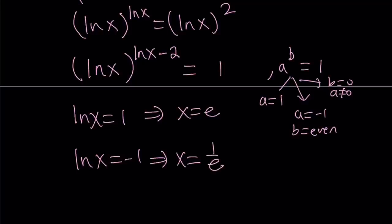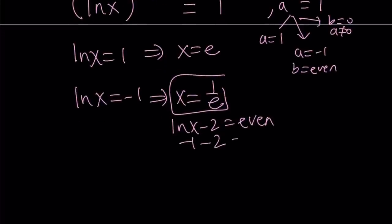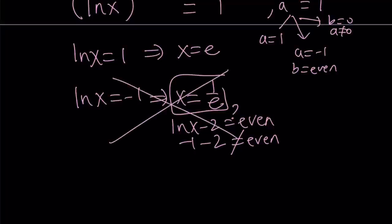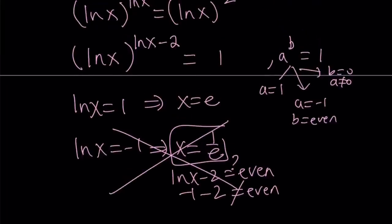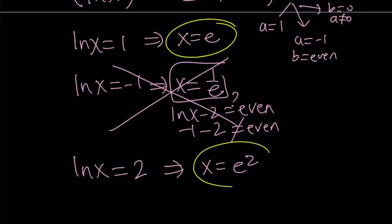But we also have to have that b is even. So when x equals one over e, do we get ln x minus two being even? If ln x is negative one, then this is negative one minus two, which is negative three, and that is not even. So this doesn't work — we reject x equals one over e. Looking at the third case, b equals zero: ln x minus two equals zero, which means ln x equals two, implying x equals e squared. So we get two solutions: x equals e and x equals e squared.